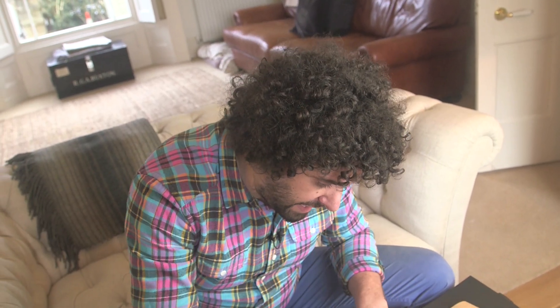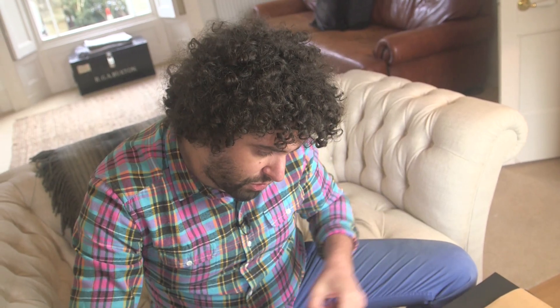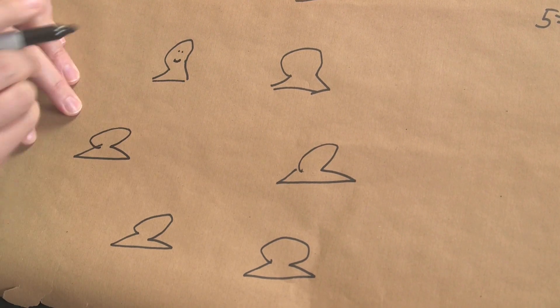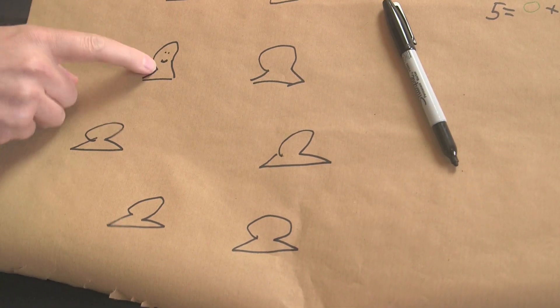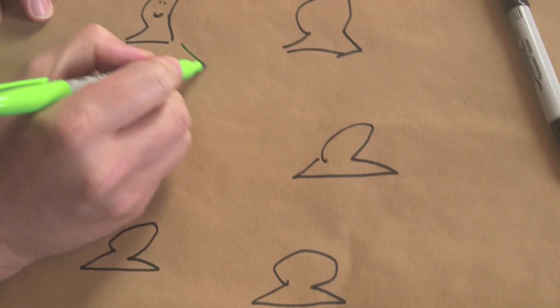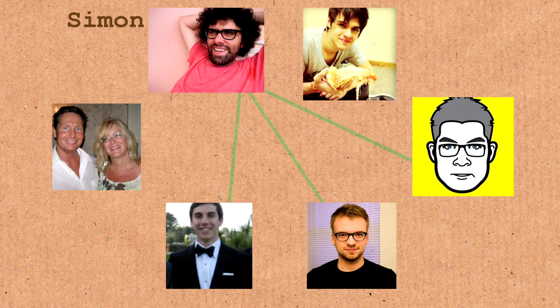If you can get your head around that, the next bit should be cool. Let's draw up another random anonymous person. Let's say he is friends with at least three people — or it could be the opposite. We're going to say he's friends with this person, this person, and this person.